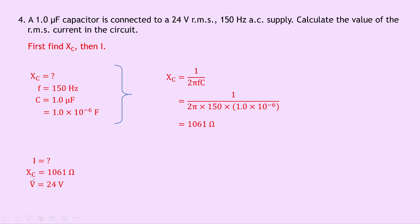So writing down our equation now relating XC, V and I, we have XC equals V over I. And substituting in the numbers, we get 1061 equals 24 divided by I. And to find I, we can cross multiply, so we end up with I over on this side is equal to 24 divided by 1061.